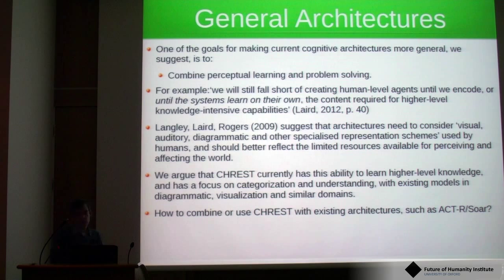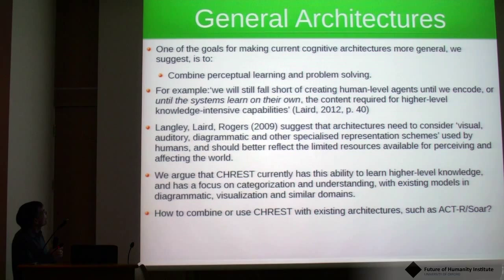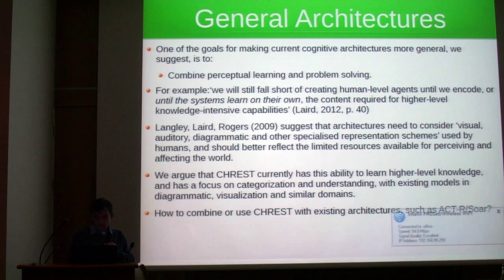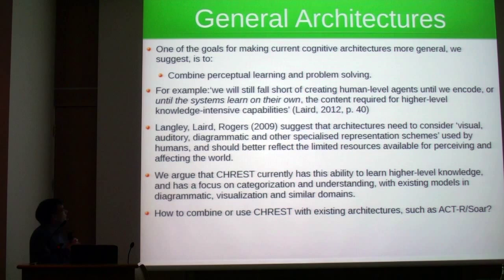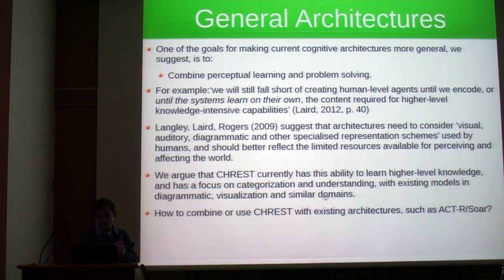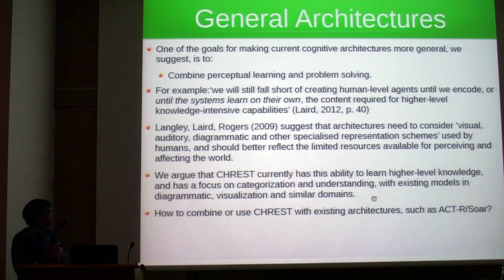There are a couple of relevant quotes. John Laird in his recent book said that we need systems that will learn on their own. Pat Langley and Cohen suggest that architects need to consider visual, diagrammatic, and other representation schemes. We would argue that CREST currently has the ability to learn higher-level knowledge with a focus on categorization and understanding, and we propose that CREST should be combined with something like ACT-R or SOAR to give a system that integrates perceptual learning and problem solving.